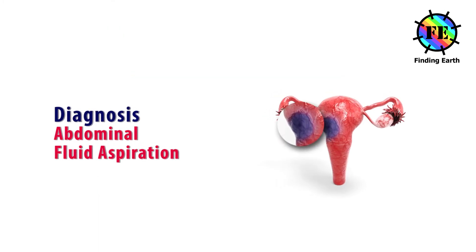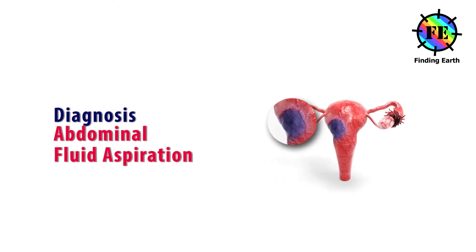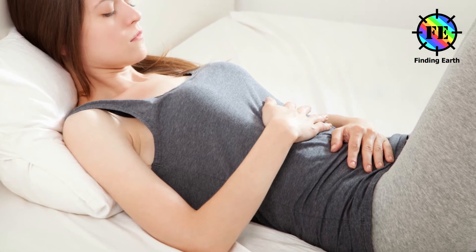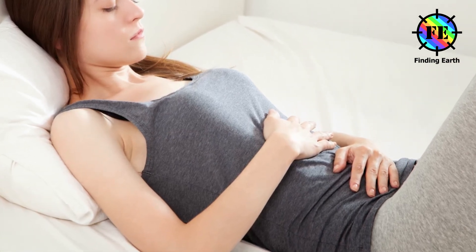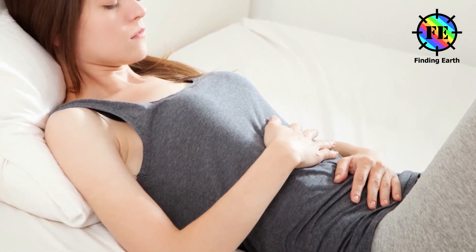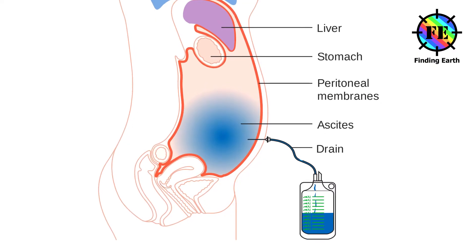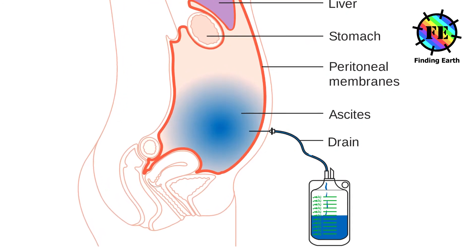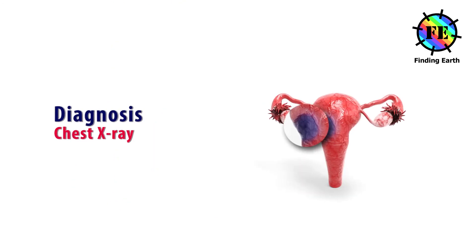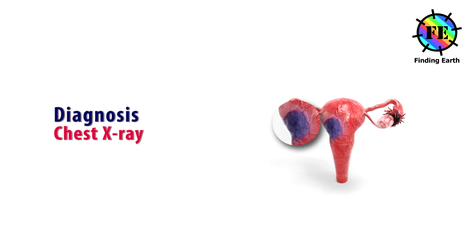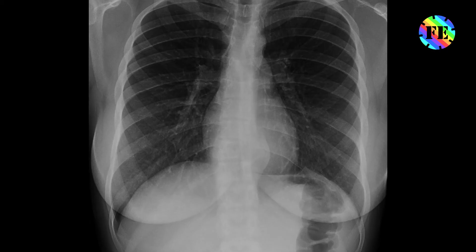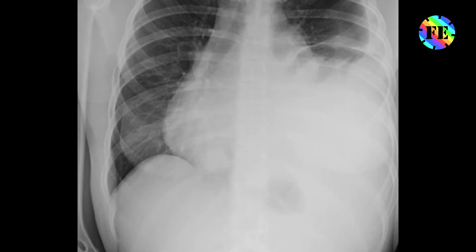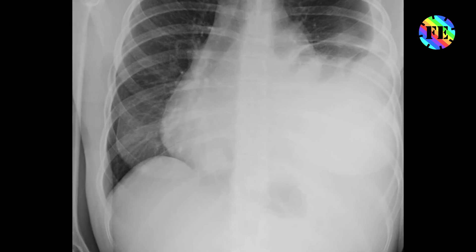Abdominal fluid aspiration: If the patient's abdomen is swollen, the doctor may decide to carry out this test. A buildup of fluid in the abdomen might indicate that the ovarian cancer has spread. Chest X-ray: This test will help the doctor see if the cancer has spread to the lungs or to the pleural space surrounding the lungs.